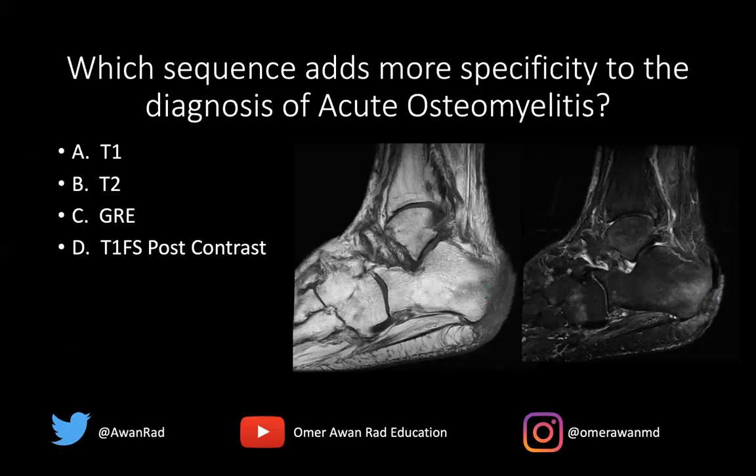The question I have for you is: which sequence adds more specificity to the diagnosis of acute osteomyelitis? Is it T1, T2, gradient, or T1 fat-sat post-contrast? The question is about specificity, not sensitivity, but specificity.